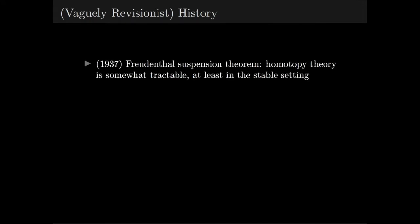Here's an overview of the history behind Postnikov towers. First, in 1937, Freudenthal showed that, depending on the connectivity of a space, there is some range in which the homotopy groups of the space stabilize. This fact allows us to reduce the computation of homotopy groups to studying more convenient spaces.